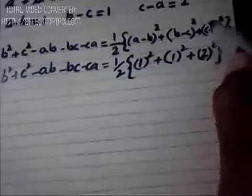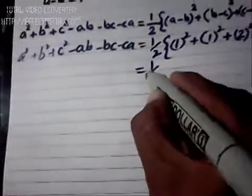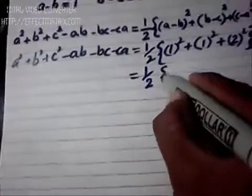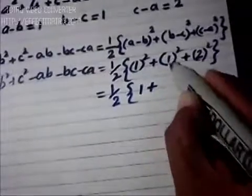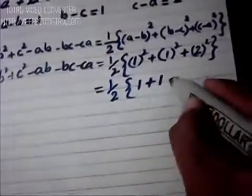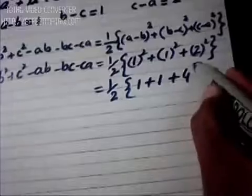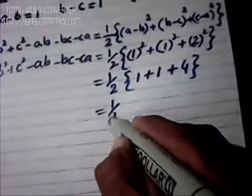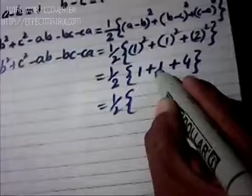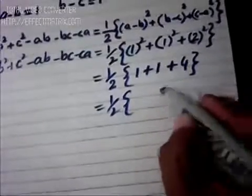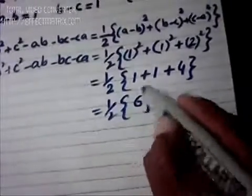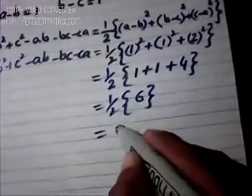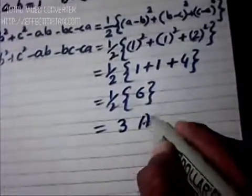The value of c - a is 2, so its square is 4. This becomes ½ into 1² which is 1, plus 1² which is 1, plus 2² which is 4. When you add them together, the result becomes 1 + 1 = 2, 2 + 4 = 6.